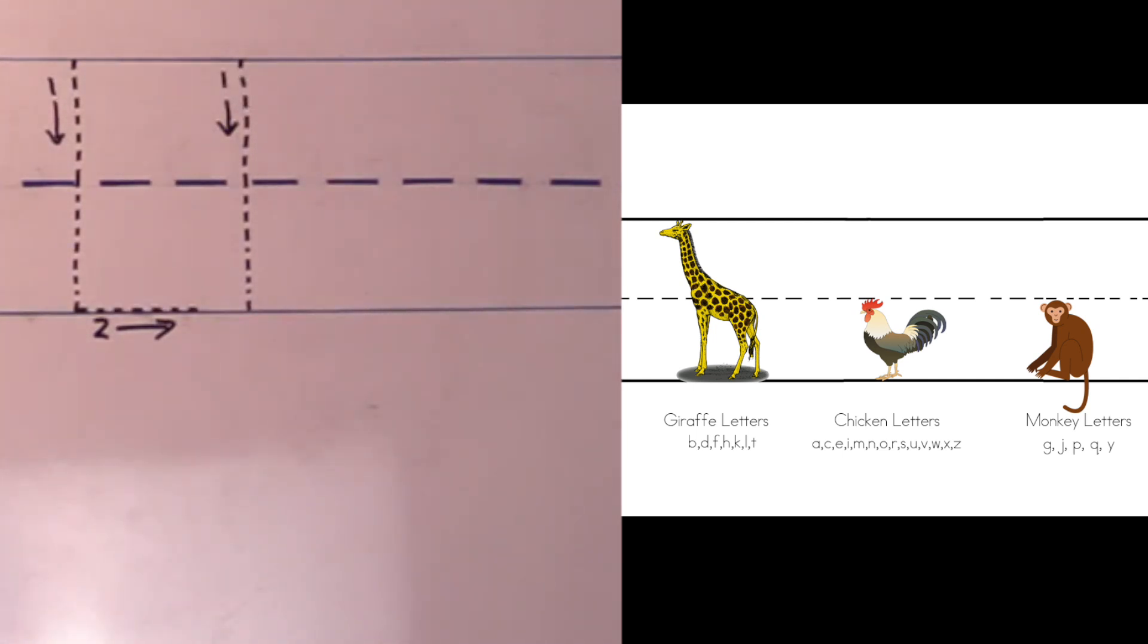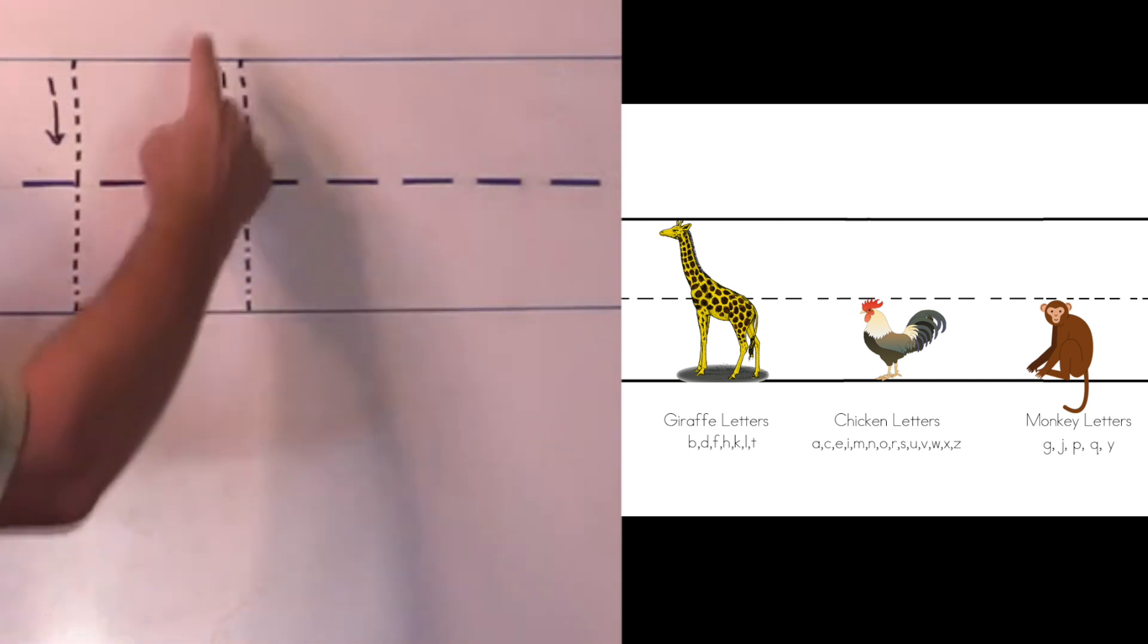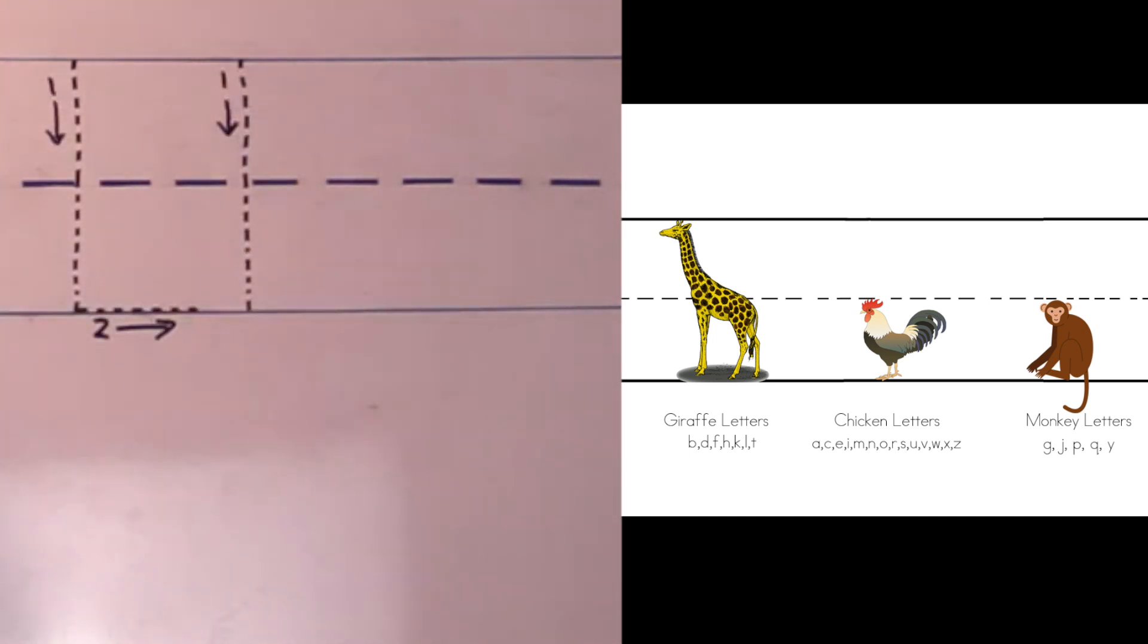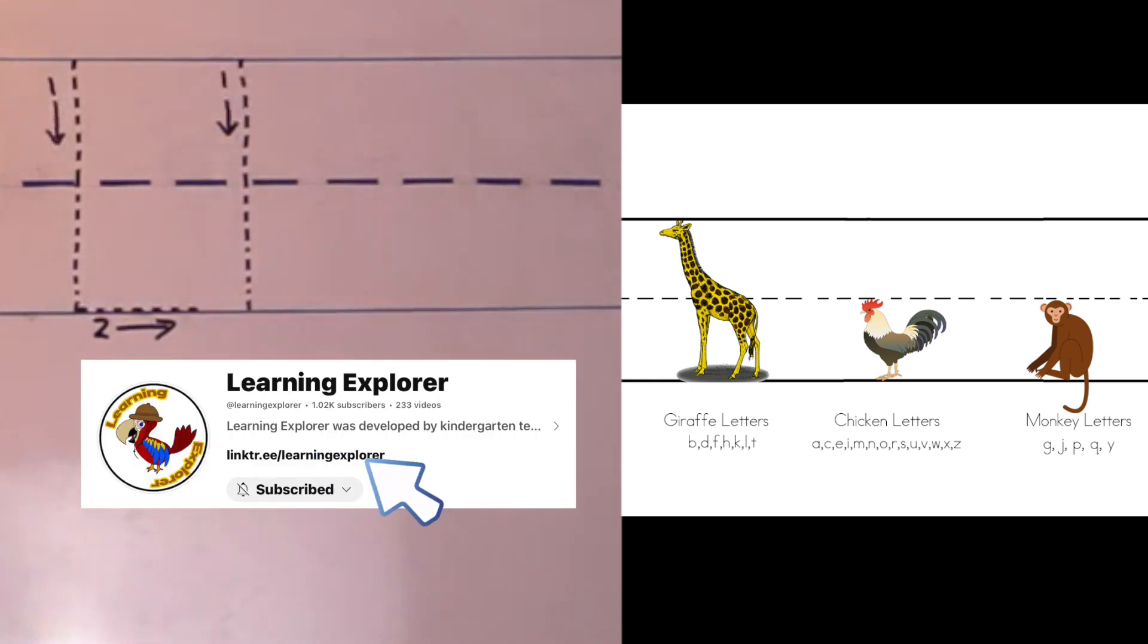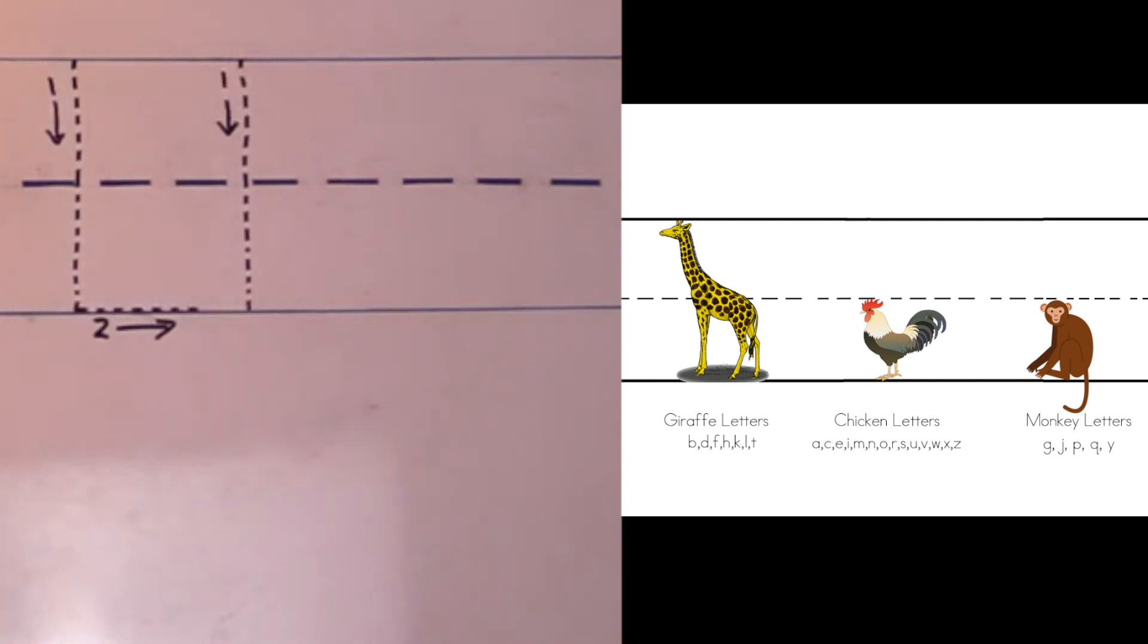When we write each letter, we do it two times. The first time is with the dotted lines and the second time is without the dotted lines. I hope you've downloaded your template off of link tree so you can practice with me. All right, here we go. Are you ready?